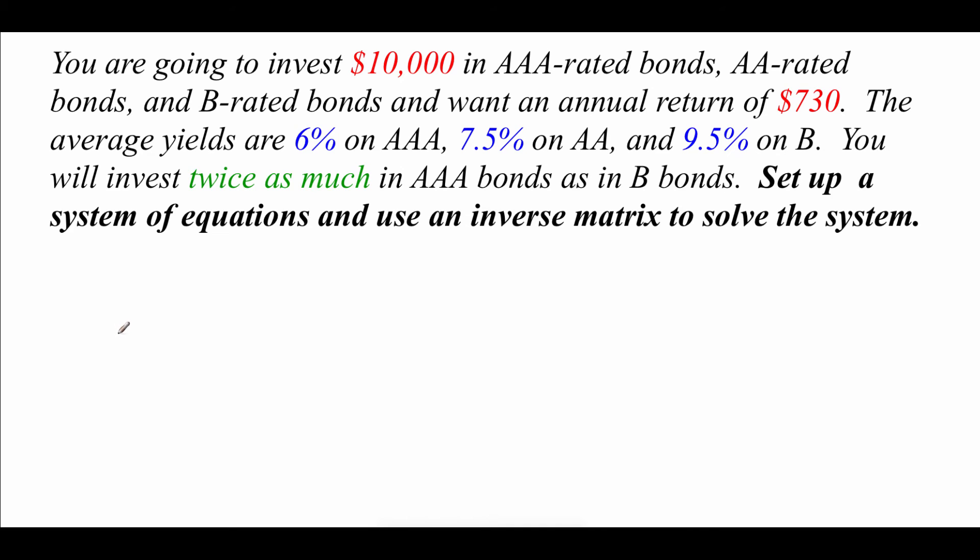So that first piece of information says that we're investing $10,000 in three different funds. So I'm going to give those funds names, and I'm just going to call them X, Y, and Z. And our total amount that we're investing when we add all that together is going to be $10,000.